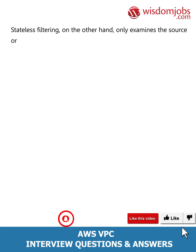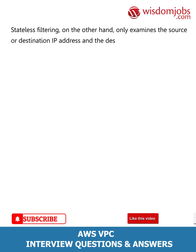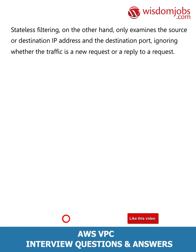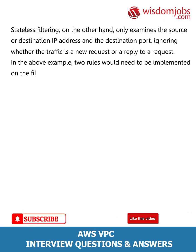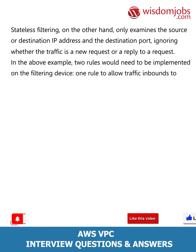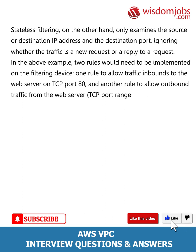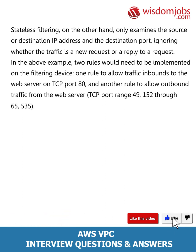Stateless filtering, on the other hand, only examines the source or destination IP address and the destination port, ignoring whether the traffic is a new request or a reply to a request. In the above example, two rules would need to be implemented on the filtering device: one rule to allow traffic inbound to the web server on TCP port 80, and another rule to allow outbound traffic from the web server on TCP port range 49152 through 65535.